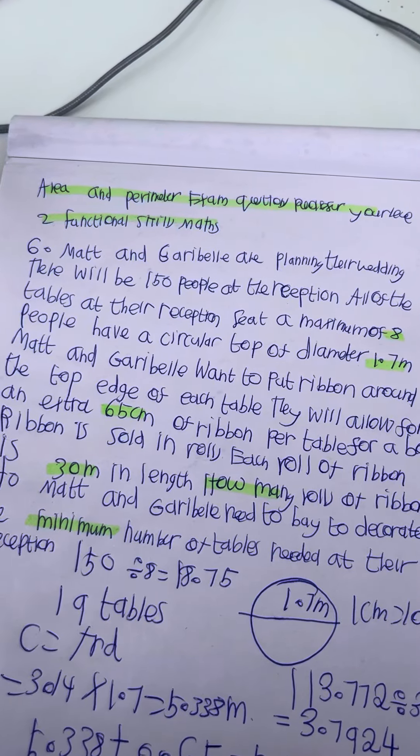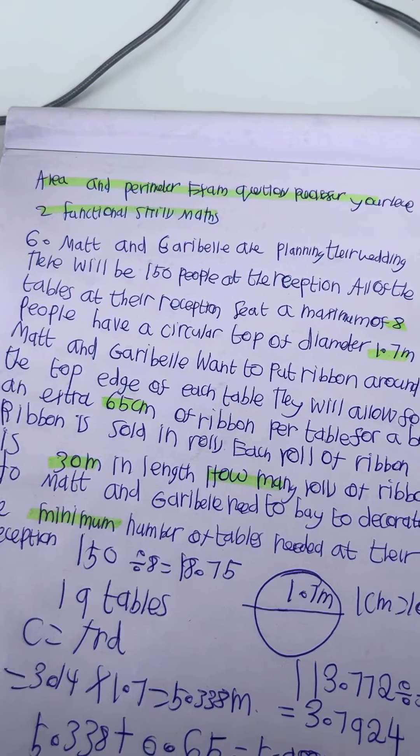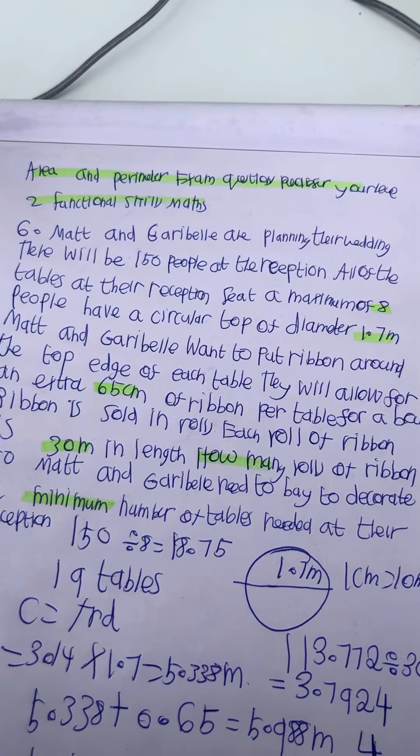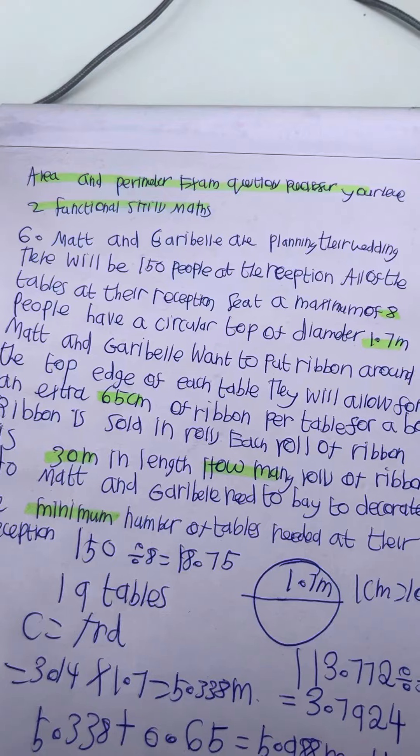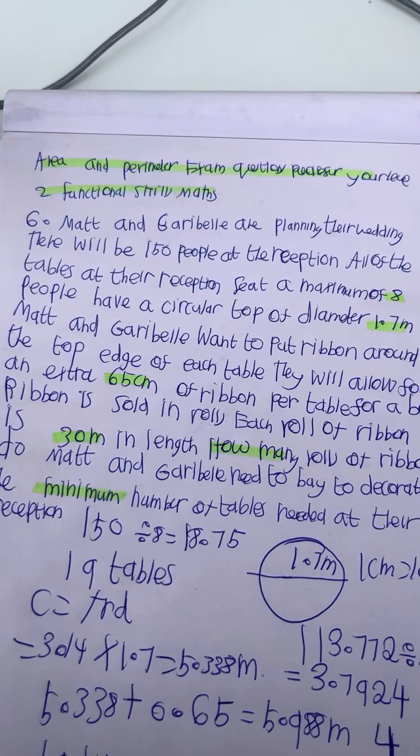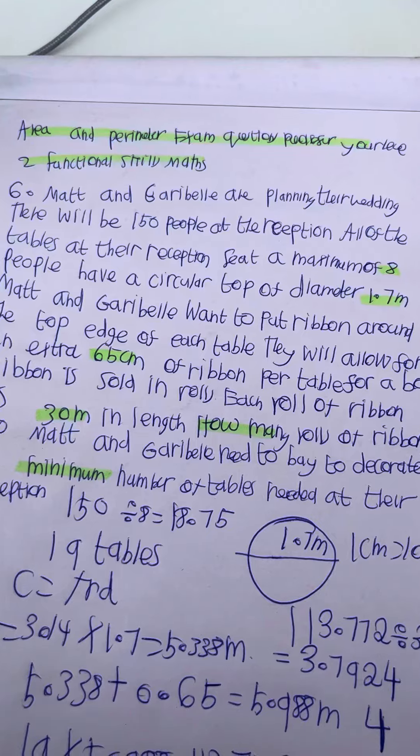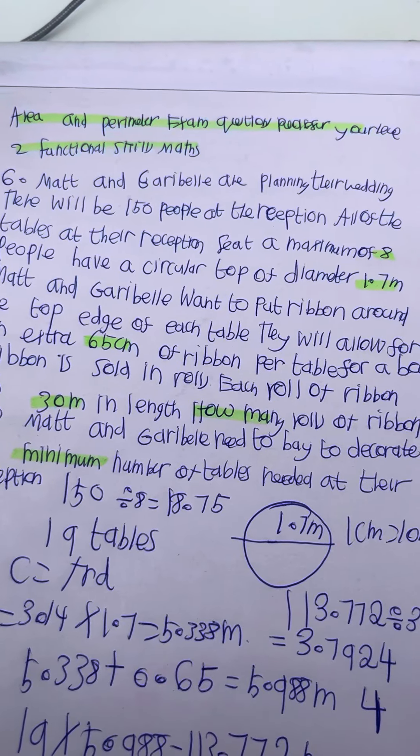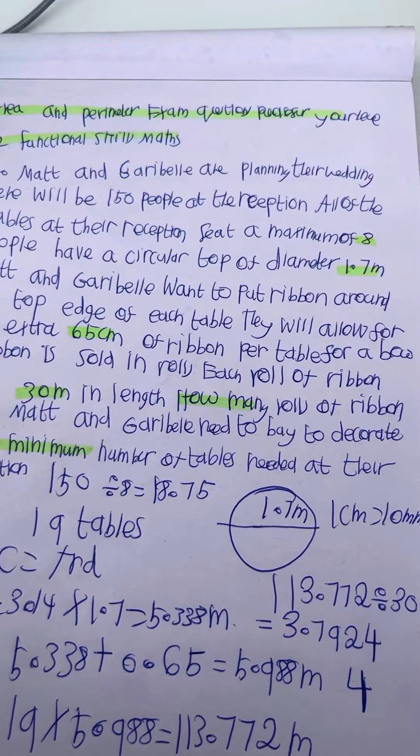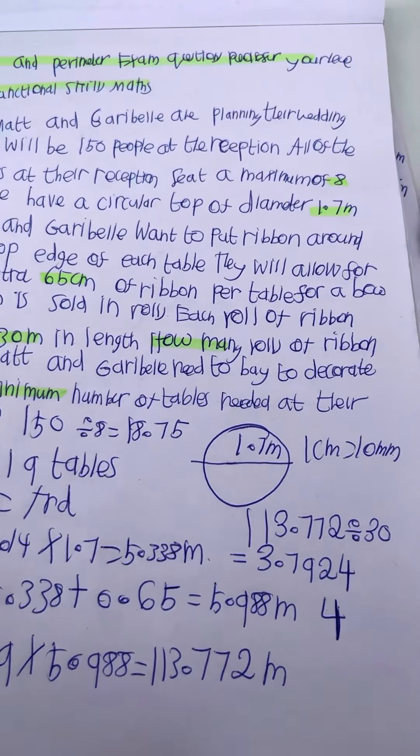Matt and Gabrielle want to put ribbon around the top edge of each table. They will allow for an extra 65 centimetres of ribbon per table for a bow. Ribbon is sold in rolls. Each roll of ribbon is 30 metres in length. How many rolls of ribbon do Matt and Gabrielle need to buy to decorate the minimum number of tables needed at their reception?